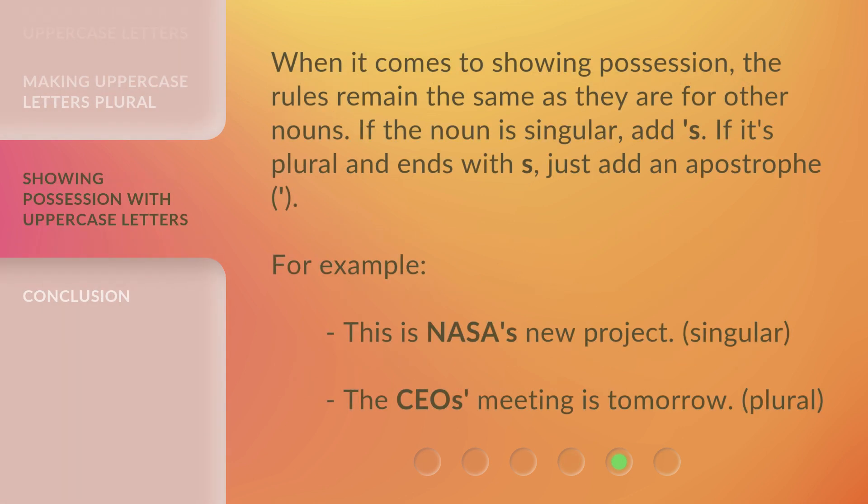Showing possession: the rules remain the same as they are for other nouns. If the noun is singular, add apostrophe-S. If it's plural and ends with S, just add an apostrophe. For example: 'This is NASA's new project' (singular). 'The CEO's meeting is tomorrow' (plural).